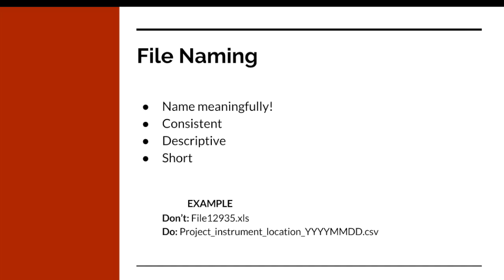When naming your files, you want to name meaningfully. Be consistent, descriptive, and short. Don't simply name it 'file12935,' or stick with the name that your software auto-generated for you. One method is to name it with project, instrument, and location if applicable, and then the date. You don't have to conform to this method of file naming, but this can be a good guide. Find what works for you, your research project, and your data — but remember to be meaningful, consistent, descriptive, and short.